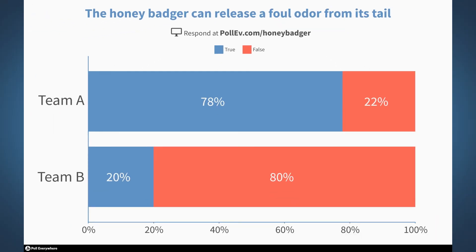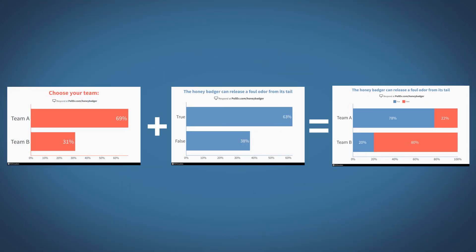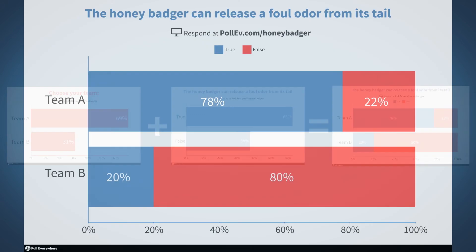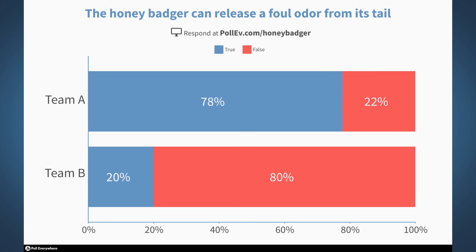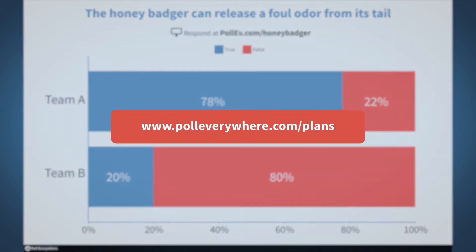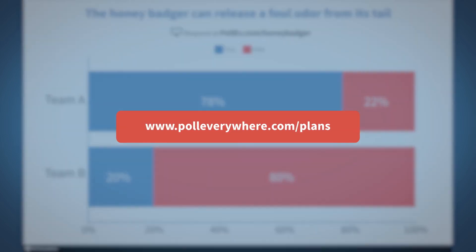Now you have a basic segmented poll. As a reminder, segmentation compares the results of two multiple-choice polls and shows you how each person responded to both. This feature is only available on certain paid plans, so be sure to check out PollEverywhere.com/plans for additional information.